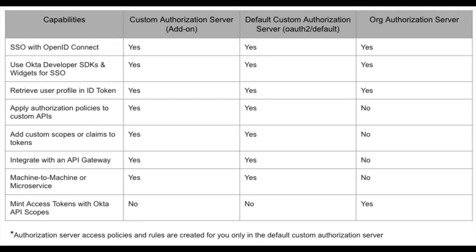Here is a table of the different authorization servers and their capabilities. We have the custom authorization server, which is an add-on feature; the default template, a ready-made custom authorization server; and the OktaOrg authorization server. The OktaOrg authorization server can be used to implement OpenID Connect, but if you need access tokens for your backend resource you'll need to upgrade to include the API access management feature to enable custom authorization servers. Feel free to pause to take a closer look.